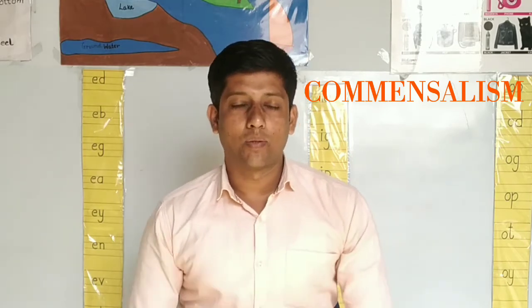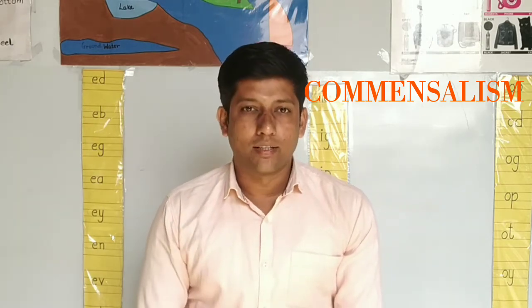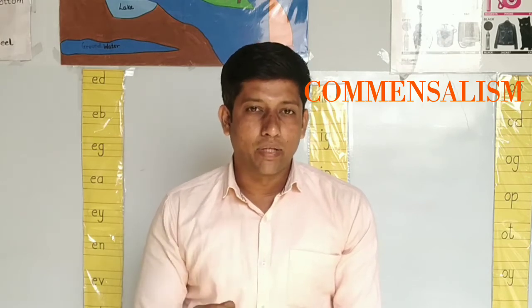There are different types of population interactions — mutualism, commensalism, parasitism, etc. About commensalism: commensalism is a particular kind of relationship in which one organism is benefited and the other organism is neutral, that is neither harmed nor given any benefit. The word commensalism means sharing of food or sharing of table.